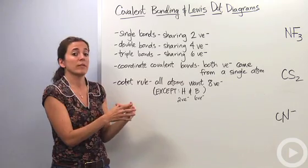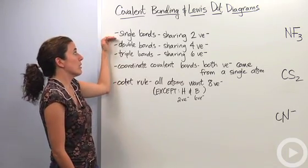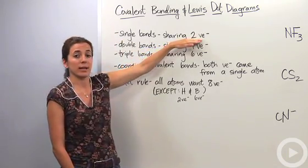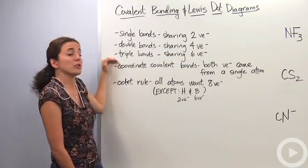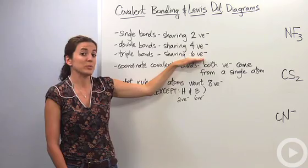There are lots of ways they can share those valence electrons. They can come together within a single bond, sharing only two valence electrons. They can come together in a double bond, sharing four valence electrons, or they can come together in a triple bond, sharing six valence electrons between the two atoms.